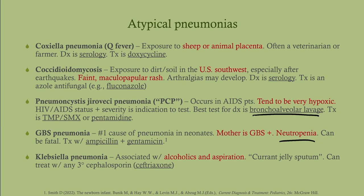Klebsiella pneumonia is associated with aspiration and typically seen in alcoholics. The classic feature is currant jelly sputum — red and jelly-like. The exam may describe it differently, but if it sounds like currant jelly, think Klebsiella. Treatment is any third-generation cephalosporin; ceftriaxone is most common.